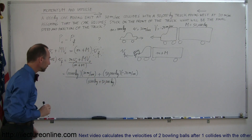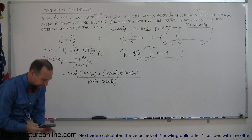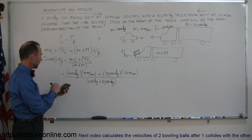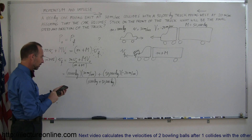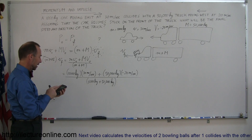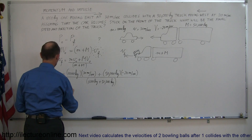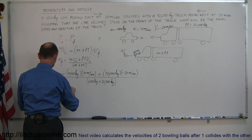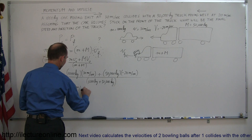Grabbing the calculator: 1,000 × 30 = 30,000; minus 50,000 × 20 = −1,000,000; then divide the whole thing by 51,000. The final velocity equals negative 19 meters per second.